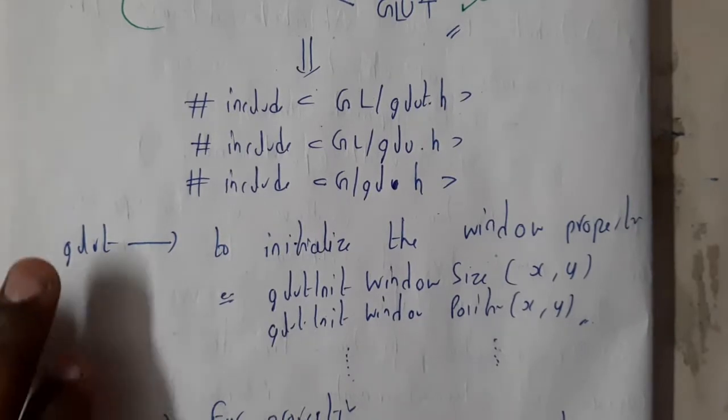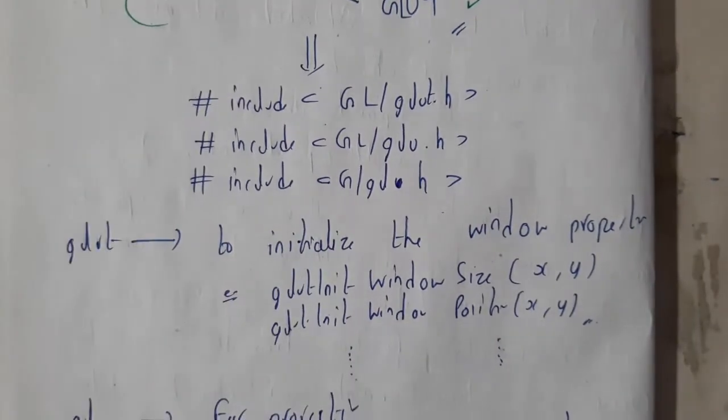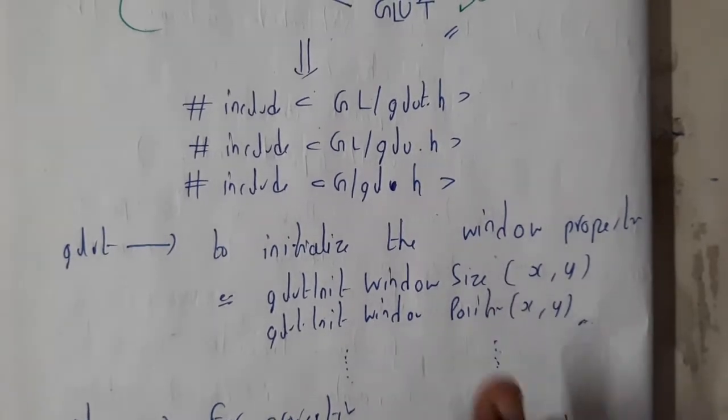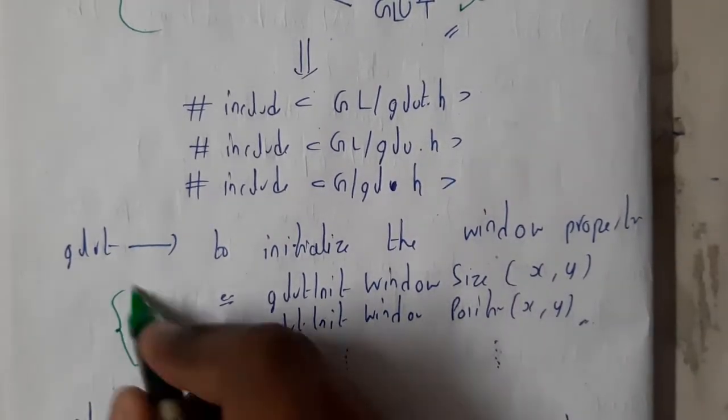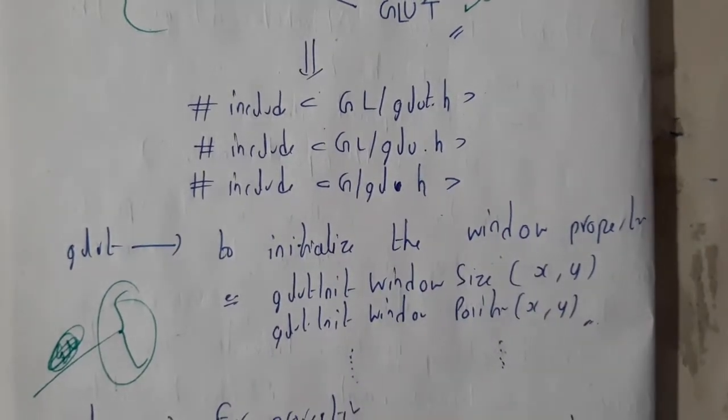GLUT - why is GLUT used? GLUT is for initializing things - initialize your window, window size, window position, and all those things. Whatever you write in your main with GLUT as initial thing comes under this topic of GLUT.